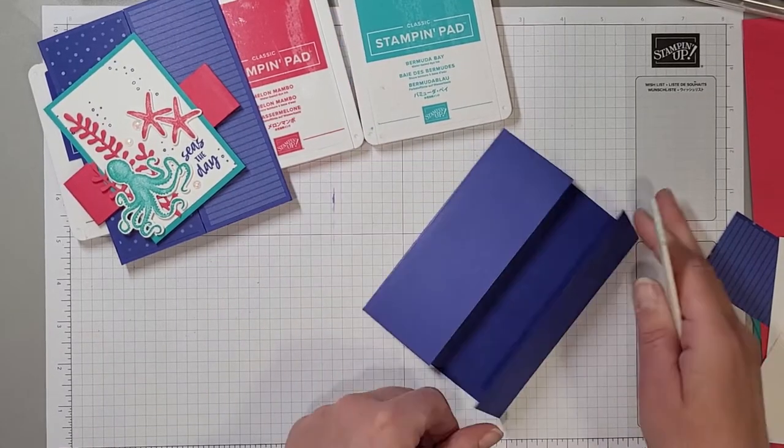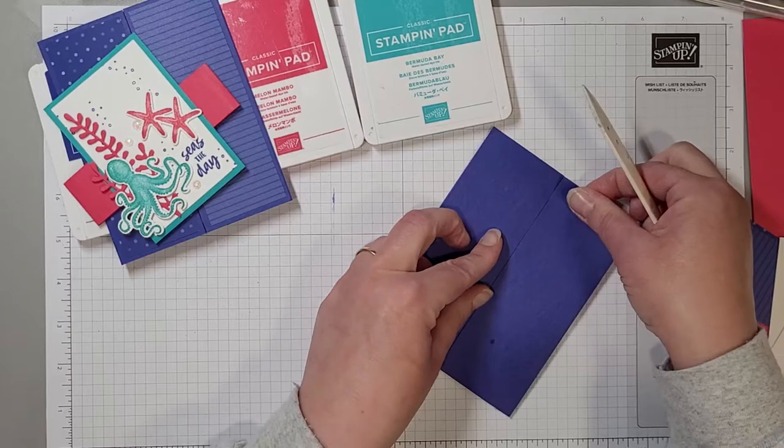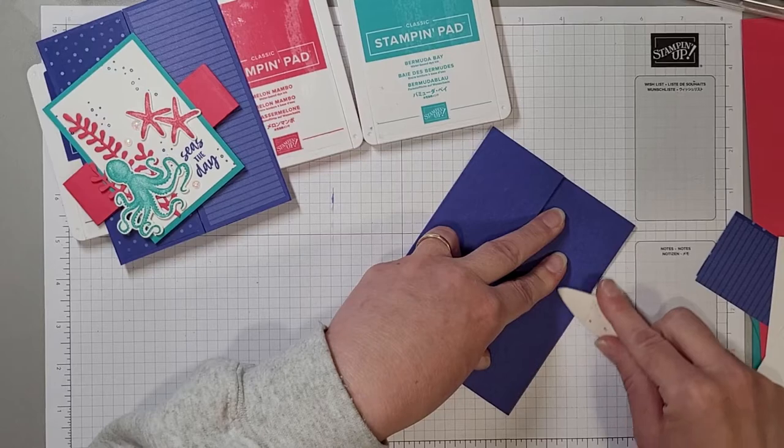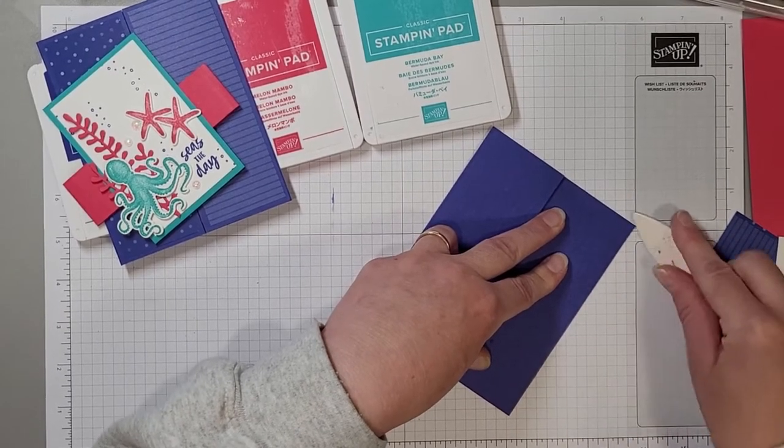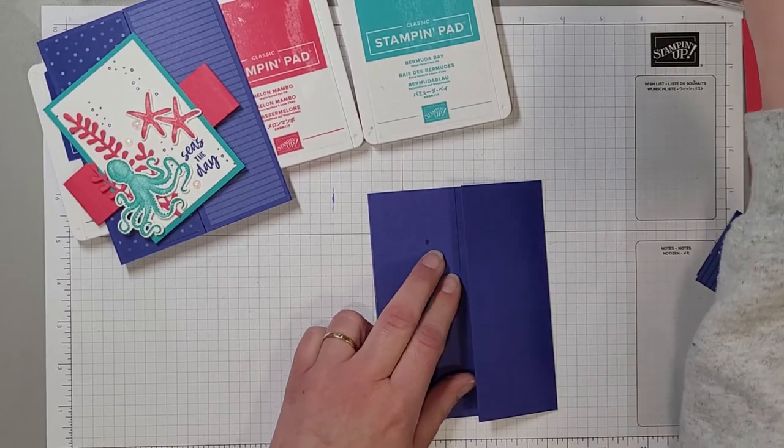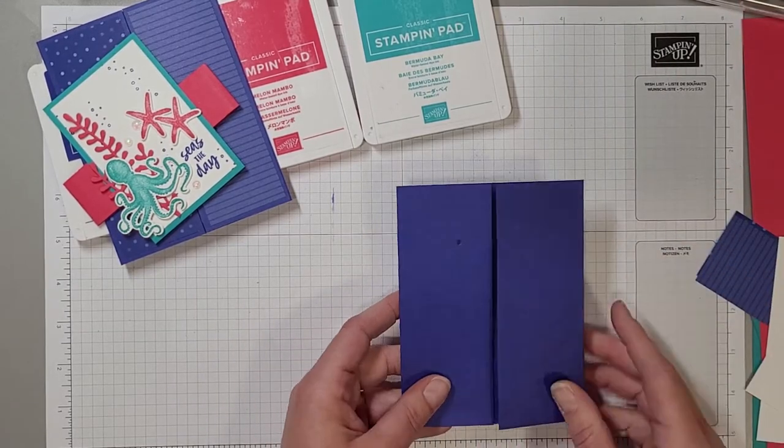If it doesn't you can just kind of manipulate it a bit to get it to match and then with your bone folder just crisp that edge and it'll lay exactly how you want it to go. So there we've got our base.